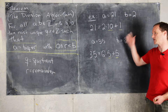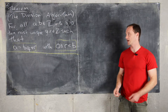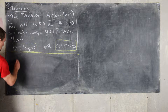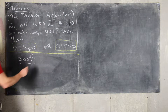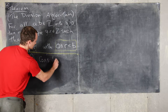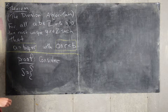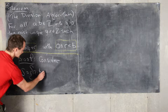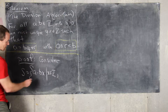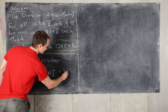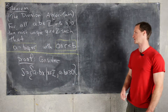Now that we've seen some examples, let's look at the proof in general. An important component of this proof is a certain set S, made up of all numbers of the form A minus B times X, where X runs over all integers, as long as A minus BX is greater than or equal to 0.